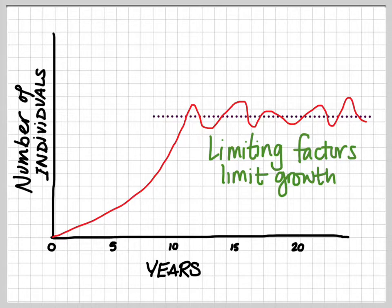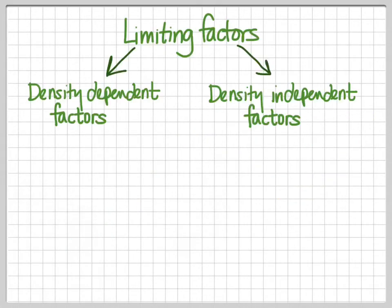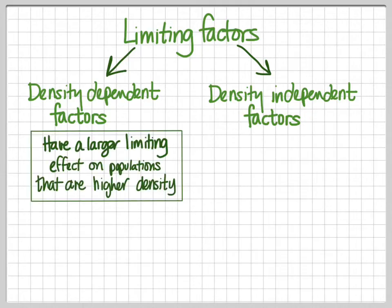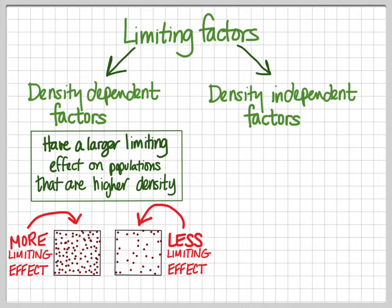This should look familiar by now. We've got a population starting out from zero and growing exponentially for a while before something limits their growth. Limiting factors limit growth. What you should know is that there are two broad categories of limiting factors: density dependent limiting factors and density independent factors. Density dependent limiting factors have a larger limiting effect on populations that are higher density. So the first population here will see more limiting from a density dependent factor than the population on the other side, which will see less limiting effect from the same kind of density dependent factor.